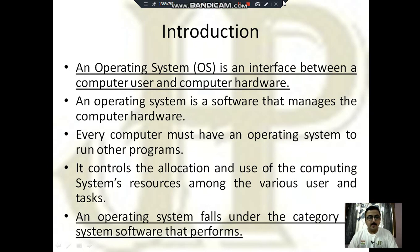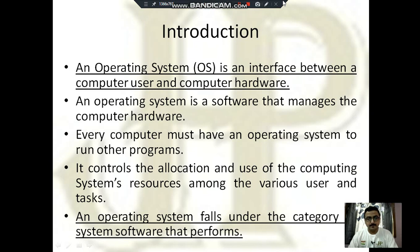That's why it controls the allocation and use of computing resources among the various users and tasks. An operating system falls under the category of system software. It is a system software which works as an intermediary between a computer user and computer hardware.